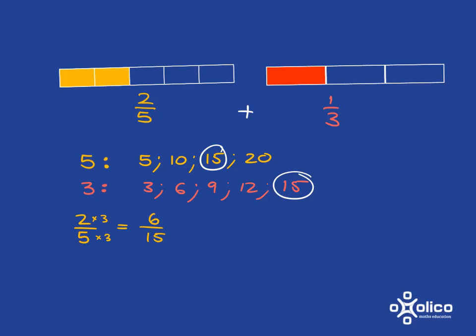And then I go ahead and I do the same thing with one-third. I need to get that to have a denominator of fifteen. To get to fifteen I multiplied by five, so I must do the same to the numerator, and I get five-fifteenths.